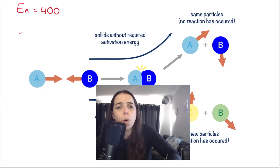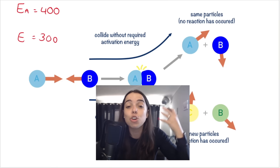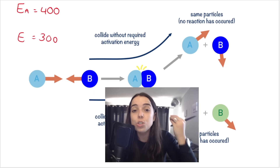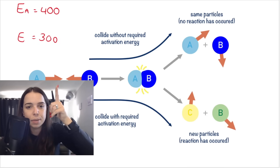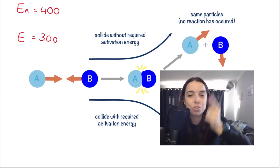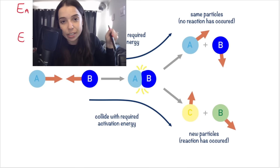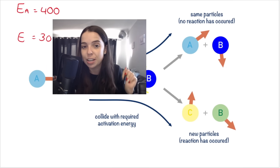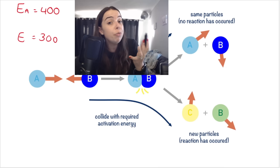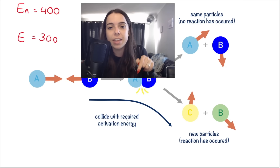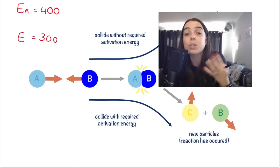Let's say these particles have energy of only 300 — they don't have energy greater than or equal to the activation energy, so no effective collision takes place. No reaction — A and B just continue off as normal. But if they collide with enough kinetic energy equal to or greater than the activation energy — say 500 or 400 — then the collision will be effective and new products or molecules will form.